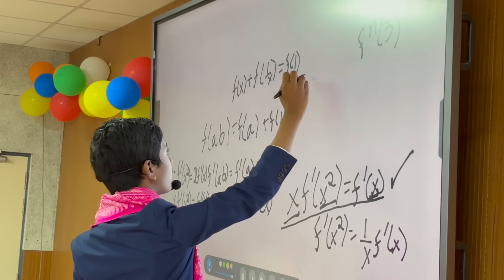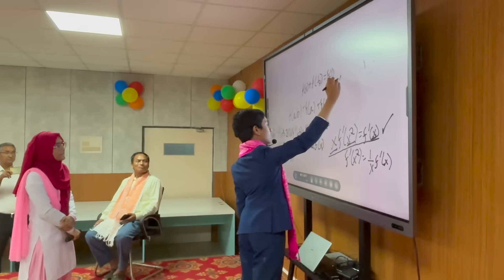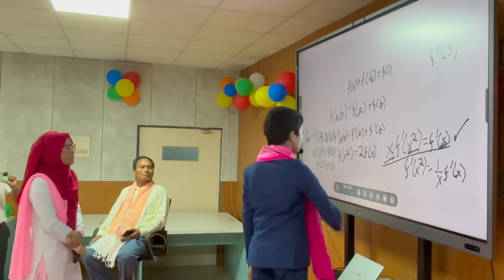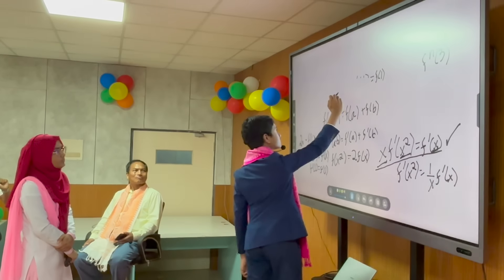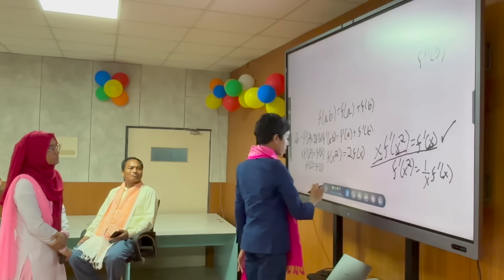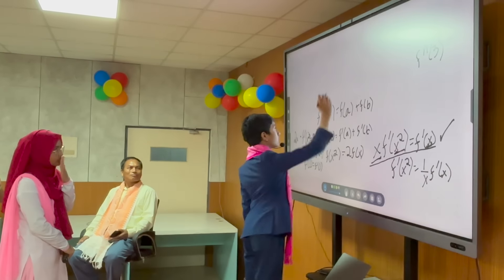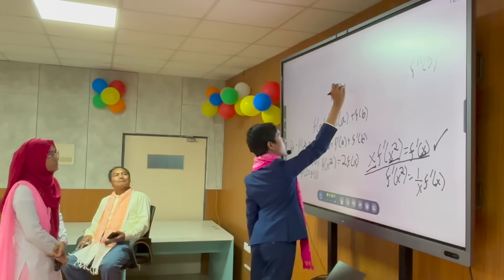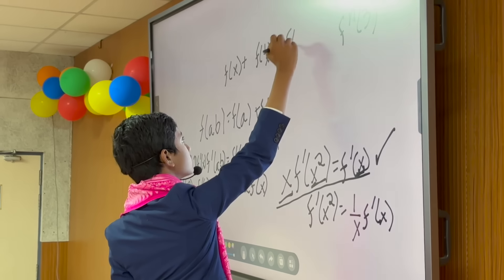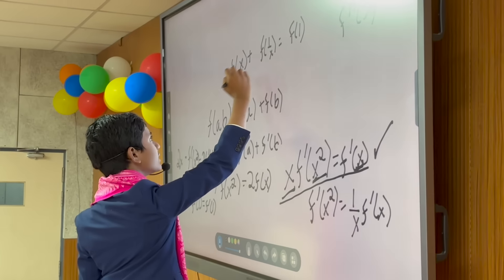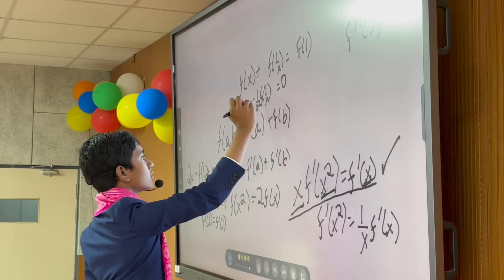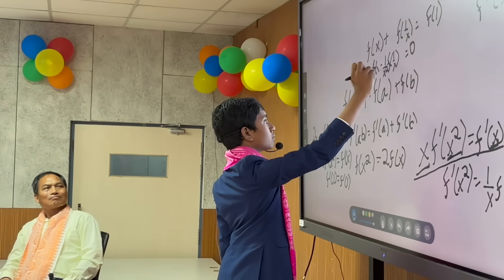So f(x) + f(1/x) = f(1). Taking the derivative on both sides: the derivative of f(1/x) is −(1/x²)·f'(x). So that means 1 minus 0... how do we find f'(1)? Is there anything else we can attempt?